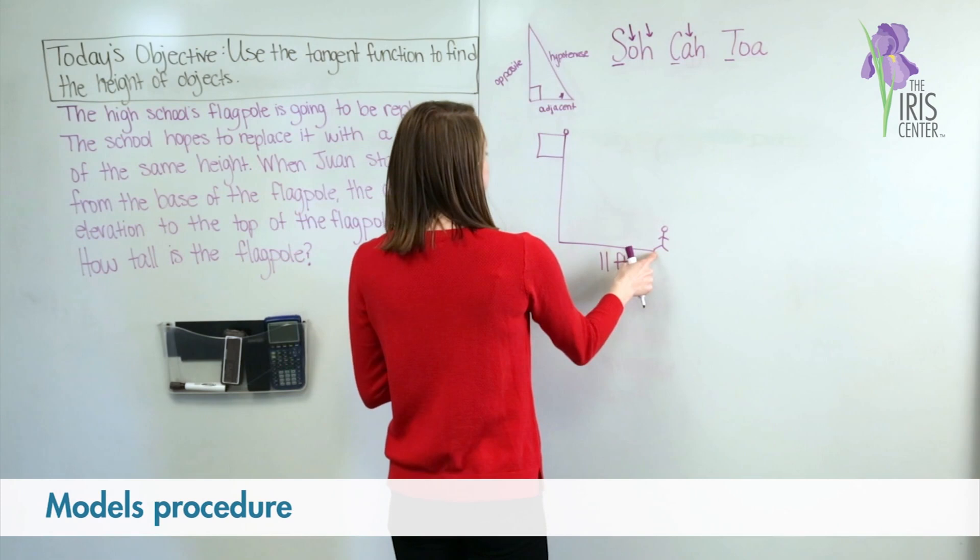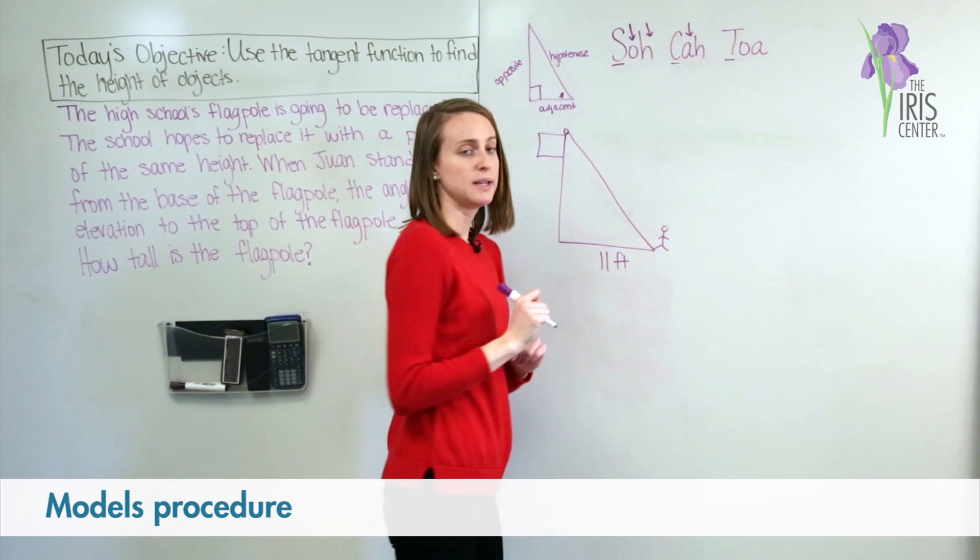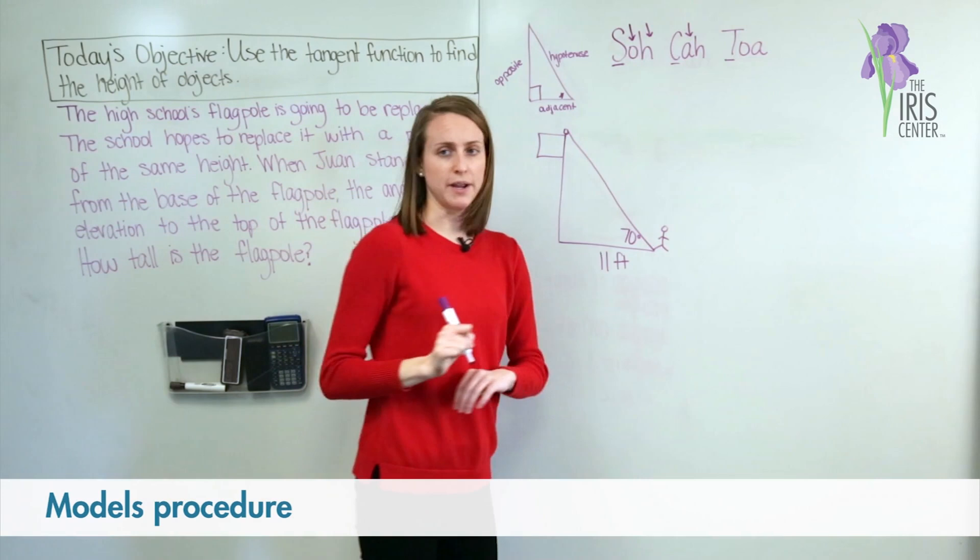I notice that it says the angle of elevation from the person's feet to the top of the flagpole — so here to here — is 70 degrees. So I'm going to label that on my diagram.